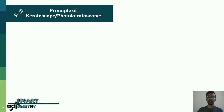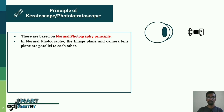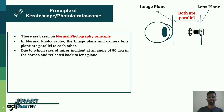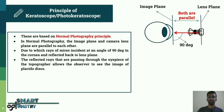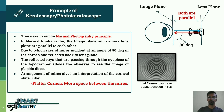Principles of Keratoscope or Photokeratoscope. These are based on normal photography principles. In normal photography, the image plane and camera lens plane are parallel to each other. Due to which, rays of mires are incident at an angle of 90 degrees on the cornea and reflected back to the lens plane. The reflected rays passing through the eyepiece of the topographer allow the observer to see the image of the Placido disc. The arrangement of mires gives an interpretation of the corneal state: a flatter cornea shows more space between the mires, and a steeper cornea shows less space between the mires.